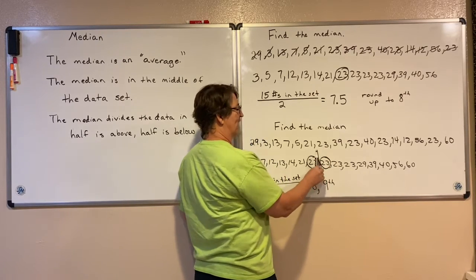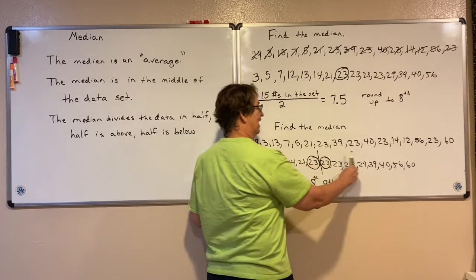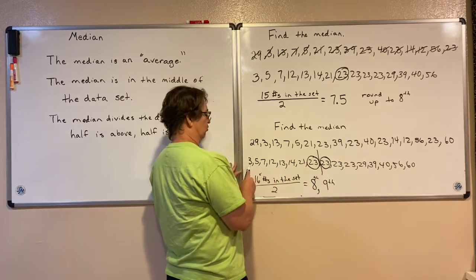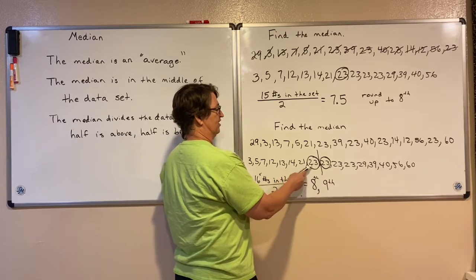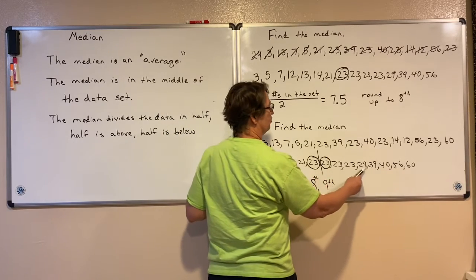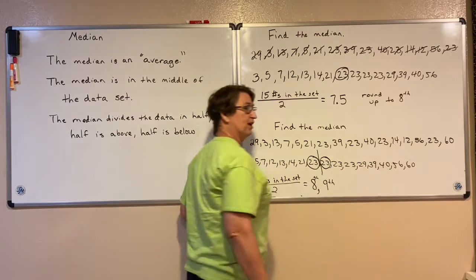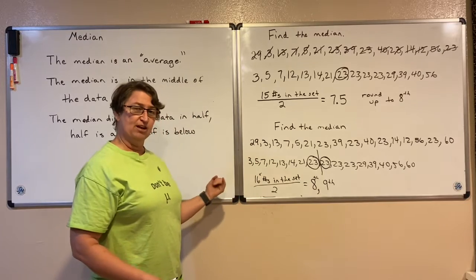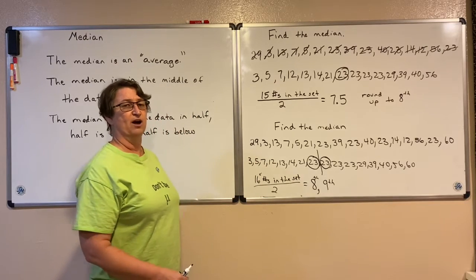So now we have half below and half above — 8 below and 8 above. Sure enough, 50% of our data is below and 50% is above.